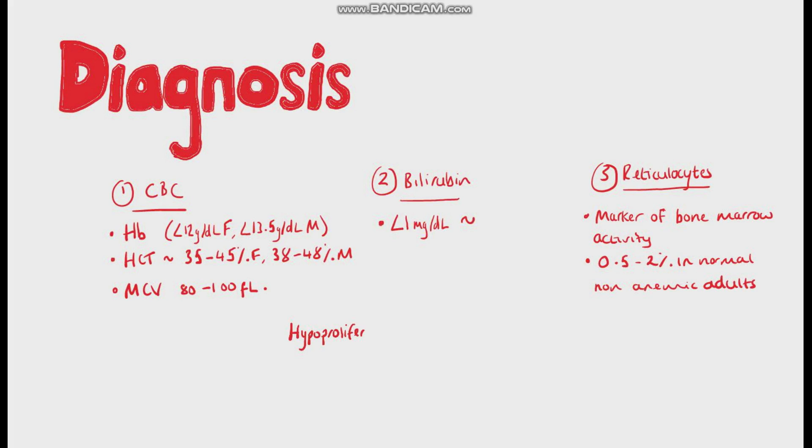Hypoproliferative anemia usually has a low or normal bilirubin level and low reticulocytes. Ineffective erythropoiesis usually has higher bilirubin levels that occurs due to increased breakdown of hemoglobin but low reticulocytes. In cases of hemorrhage, you would expect to see normal bilirubin and high reticulocytes, compared to hemolytic anemia where you would expect to see high bilirubin and high reticulocytes, again because of the increased destruction of red blood cells.